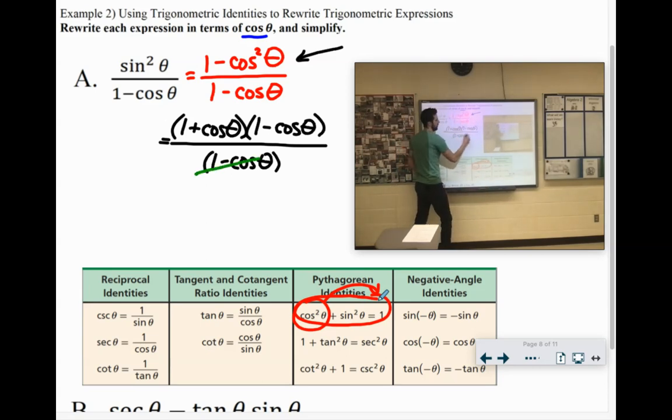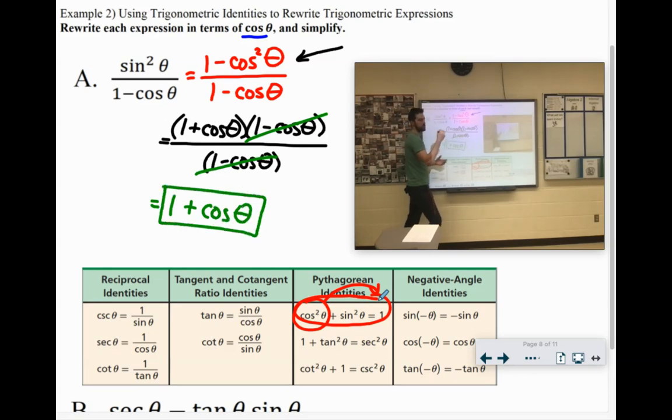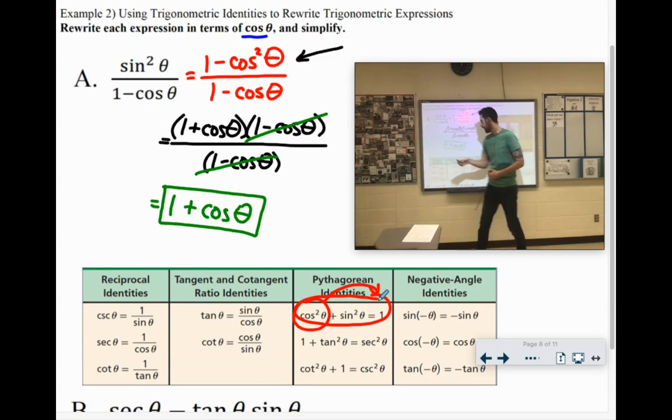So we can cancel out the group for the group. And all we're left with, then, is 1 plus cosine of theta. That would be our final answer. You can't simplify any more than that. Okay? So let's try another one.